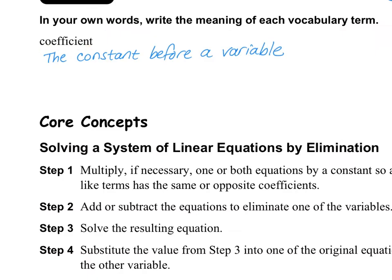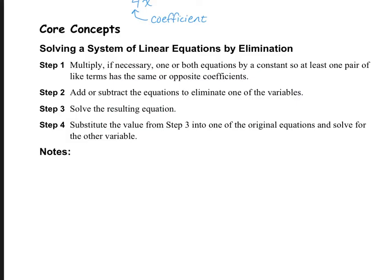A coefficient is the constant before the variable. For example, if I had 4x squared, then the 4 is the coefficient.